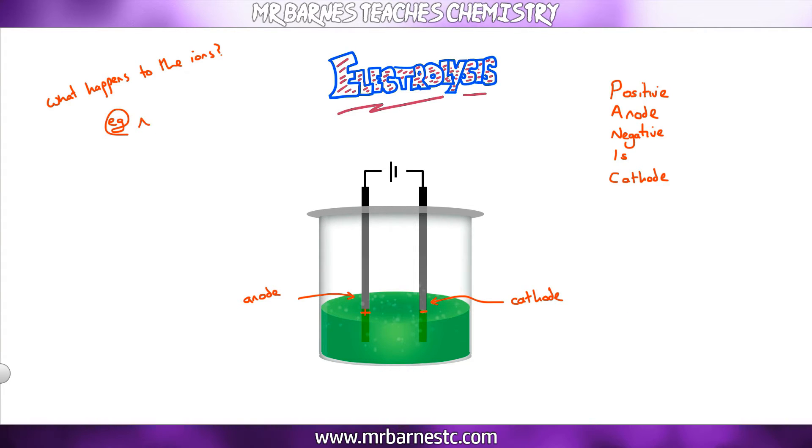If we take sodium chloride, which contains Na+ cations and Cl- anions, opposites attract. Your positive cation is going to go to your negative cathode. The opposite is going to occur with your anion. Your negative anion is going to move to your positive anode.